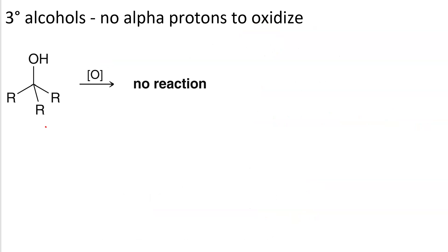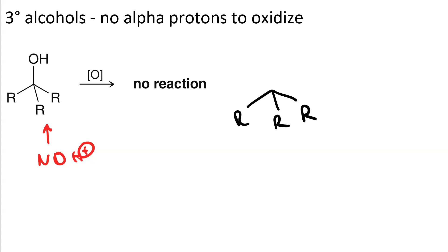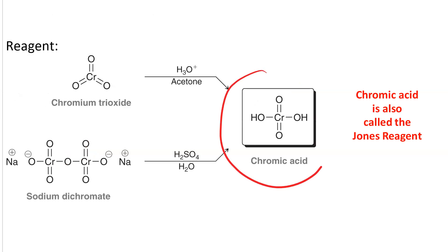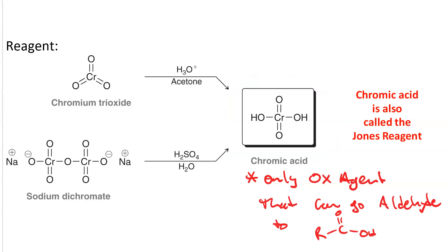Tertiary alcohols don't have any alpha protons, so we can't oxidize them. That makes sense because if we somehow put a carbonyl there, it would violate the octet rule. So what we want is chromic acid — this is the strongest oxidizing agent. Jones reagent (chromic acid) is the only oxidizing agent that can take you all the way to a carboxylic acid.